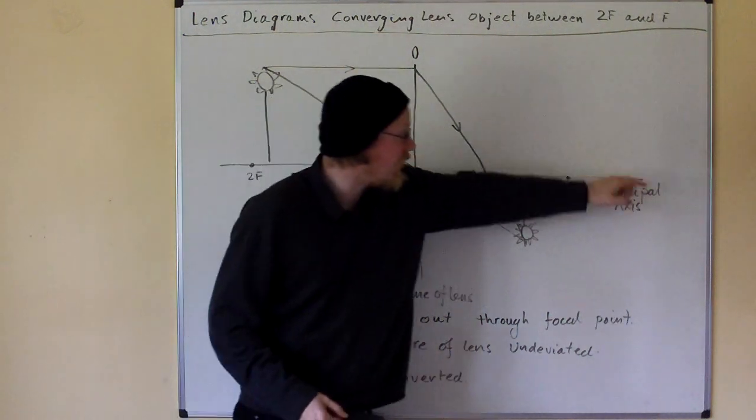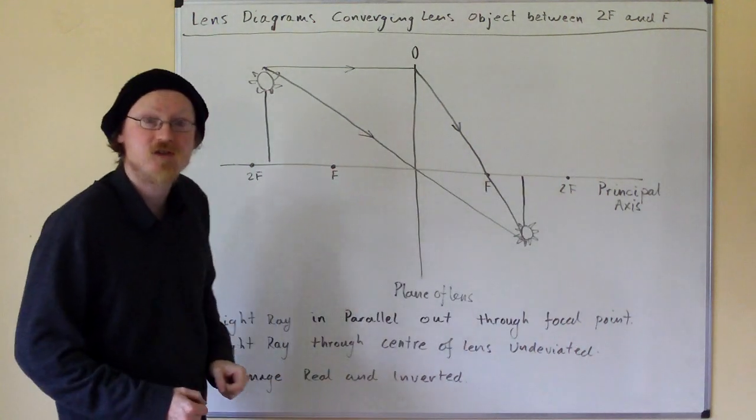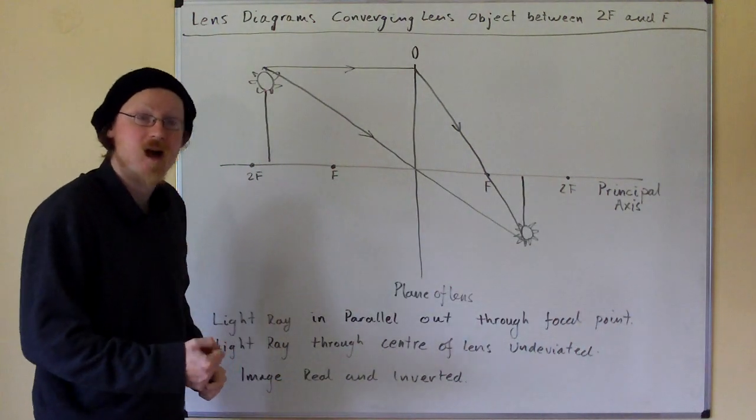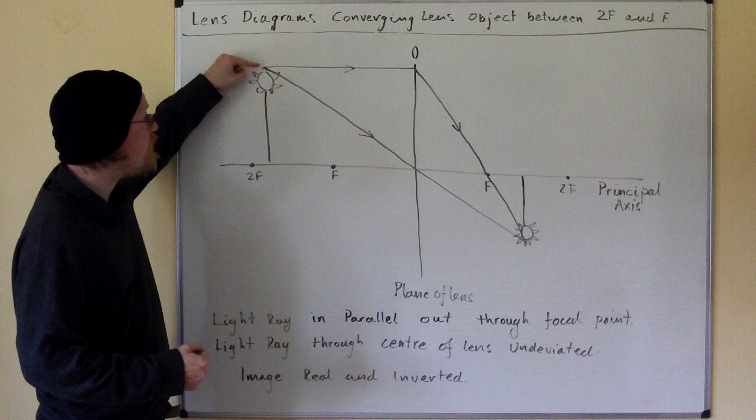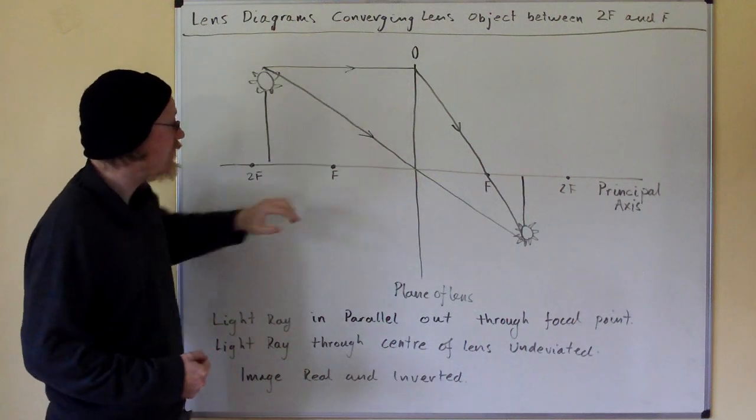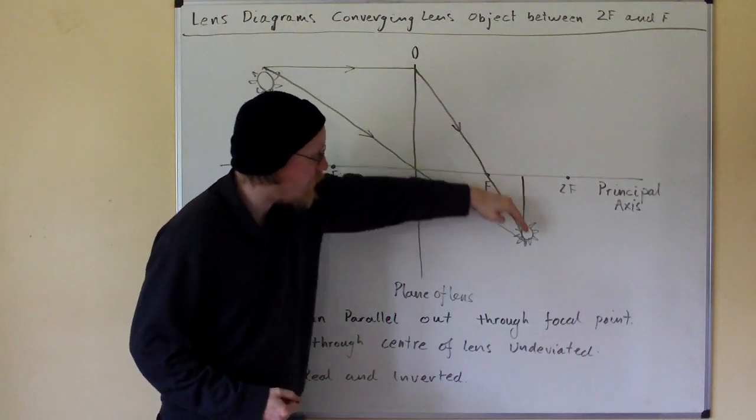And this is the principal axis upon which the focal point lies. Now, the light ray that comes in parallel to the principal axis comes out through the focal point.